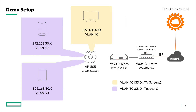Here is the detailed topology. We are using an AP505 connected to a 2930F switch. The switch is connected to an Aruba Gateway 9004, which acts as a router with all necessary VLAN interfaces and a DHCP server for these VLANs. The gateway also NATs traffic from these VLANs to the internet. The smartphone and iPad will be on VLAN 30 with IPs in the 192.168.30 subnet, and the TV will be on VLAN 40 with IPs in the 192.168.40 subnet.